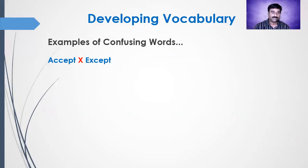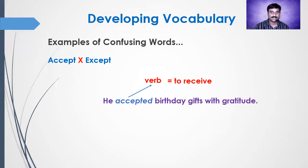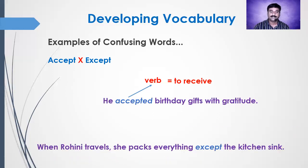These two words are often confused while writing or while listening. Even some people also speak these words in the wrong manner. The first pair is 'accept' and 'except'. Let's have one example: 'He accepted birthday gifts with gratitude.' In this sentence, 'accept' is a verb and it means to receive — he received birthday gifts with gratitude.